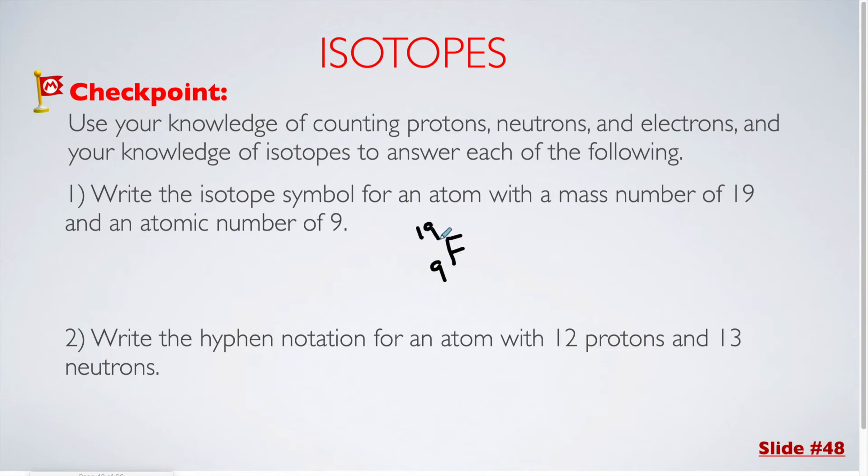This time, they gave us the mass number directly, so I don't need to add anything together. If I was given the protons and neutrons, I could add that together to find the mass number.